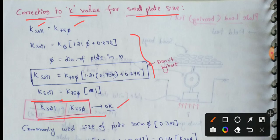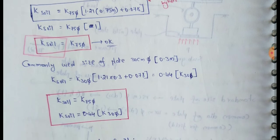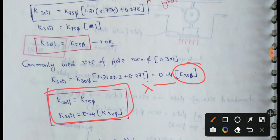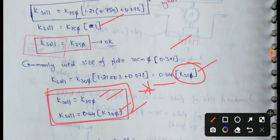For the 30 cm plate, k soil is equal to 0.44 times the k value from the 30 cm plate. This conversion between the 75 cm plate and 30 cm plate is very important. We will talk about numerical problems in the next video and solve them.